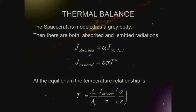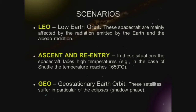The spacecraft is not a perfect body — it's a gray body. It has absorbance and emitted radiation. The temperature is a function of absorbance and emissivity.